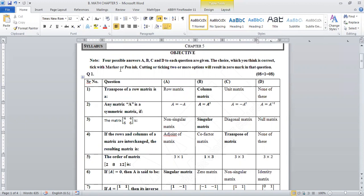When the rows and columns of a matrix are interchanged, the resulting matrix is the transpose of a matrix. The order of matrix [2 8 12] is 1 by 3. If a determinant is equal to 0, then A is said to be a singular matrix.